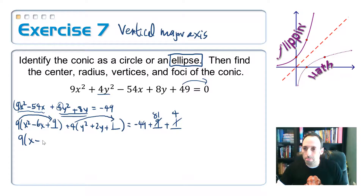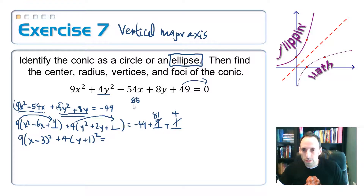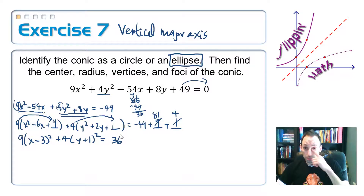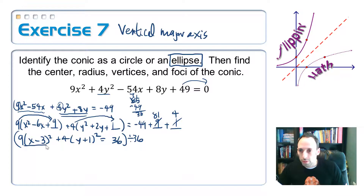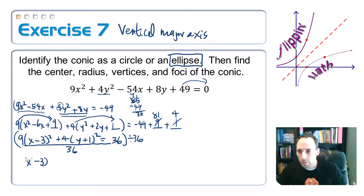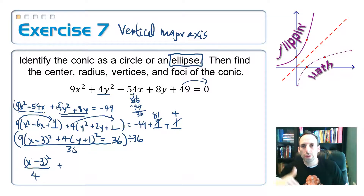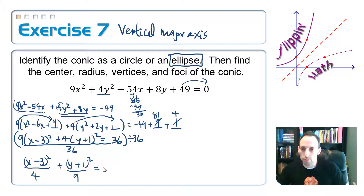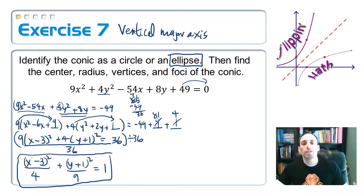Cleaning this up: 9(x − 3)² + 4(y + 1)² equals 81 + 4 − 49, which totals 36. The last step is to divide both sides by 36. Dividing gives: (x − 3)²/4 + (y + 1)²/9 = 1. And there's the equation in standard form.